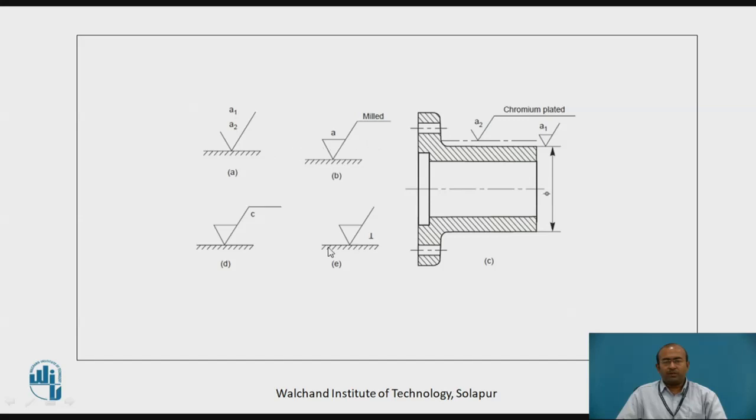Now these are the further more symbols, we will see one by one. This is the symbol A1 to A2, that means minimum surface roughness value to maximum surface roughness value which is allowed for this particular surface. The leg is further extended to the leader line and over which the milling, the milled surface surface roughness, that means this surface roughness can be achieved through this particular machining method.